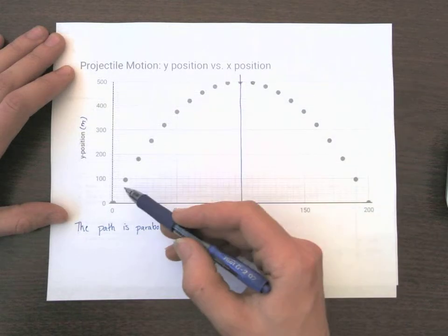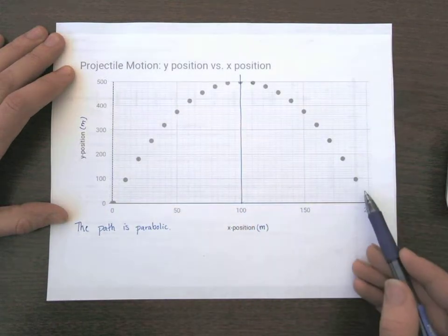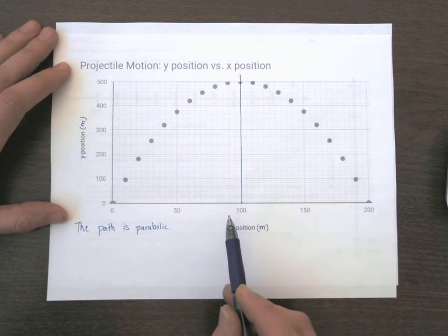When an object flies through the air, it takes just as much time to get to its highest point as it does to return back to its original position up and down, its original Y position.